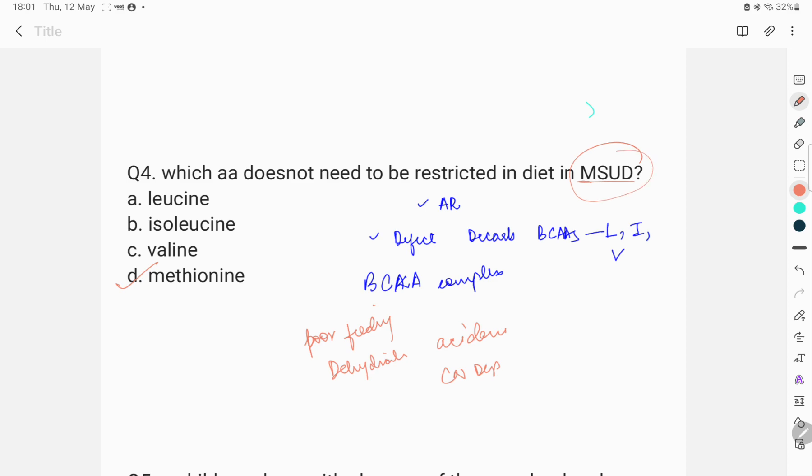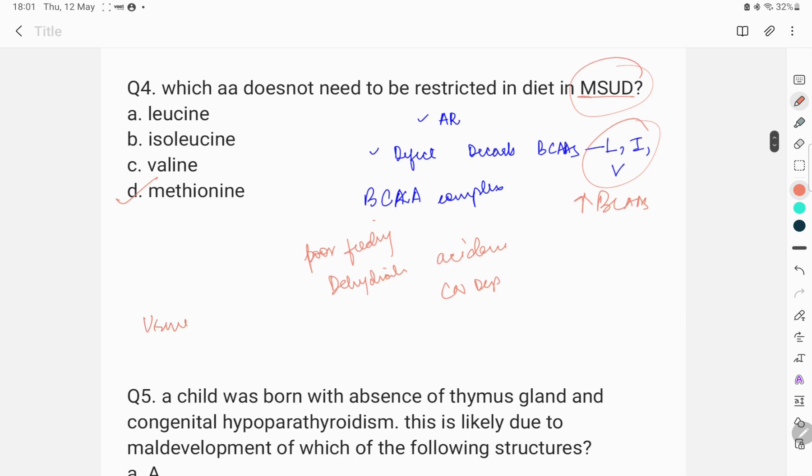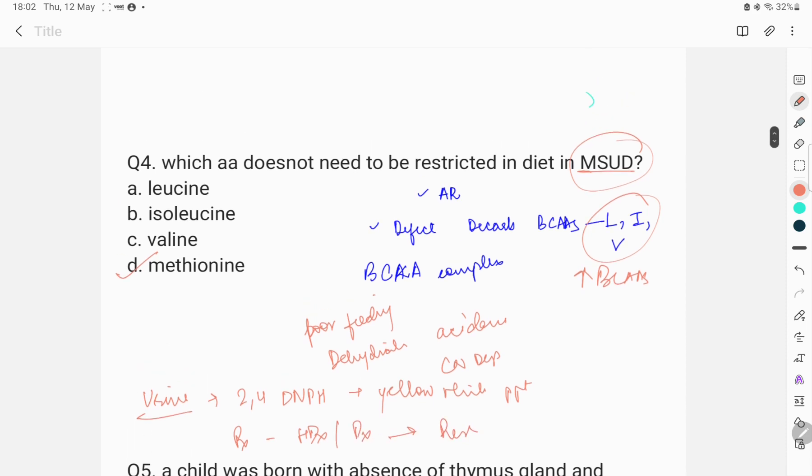Maple syrup urine disease. The name comes from the odor of the urine that is sweet, sweet like maple syrup. Also, there would be raised branched chain amino acids in the serum. Test is on the urine. Addition of 2,4-DNPH to the urine will give yellow white precipitates. Treatment is hemodialysis, peritoneal dialysis and restriction of diet and a very important supplementation. Thiamine supplementation sometimes is helpful in some cases.